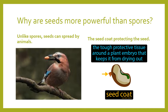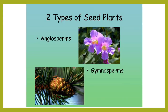The seed coat and the stored food help keep the embryo — the part that's going to become a whole new plant, shown as the green part in the picture — from drying out, and protect it if it's too cold outside while waiting to germinate. Spores, of course, don't have this advantage.